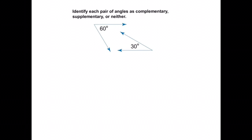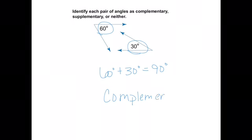Same thing again. Identify each pair of angles as complementary, supplementary, or neither. I have 60 degrees on this angle, 30 degrees on that one. So if I'm doing 60 degrees plus 30 degrees, that gives me 90 degrees total. And I know 90 degrees is a complementary angle.